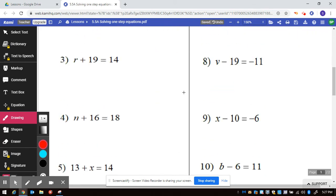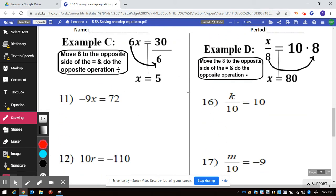Let's go ahead and take a look at example C and example D. Example C says you move the 6 to the opposite side and do the opposite operation. So the opposite, anytime you have a number next to a letter, it means multiply. And so instead of multiplying there, you are going to end up dividing.